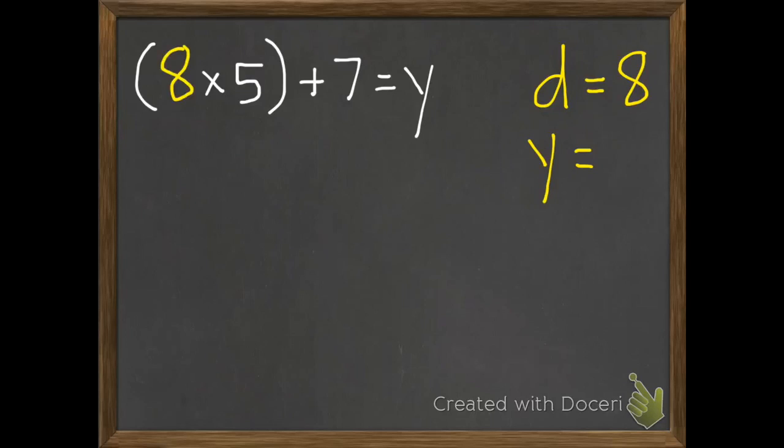So if I put in 8 for d, I now have 8 times 5 plus 7 equals y. As we remember from our order of operations lesson, we need to do our parentheses first. So what is 8 times 5? It is 40.